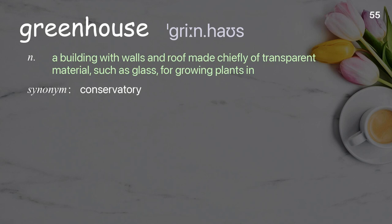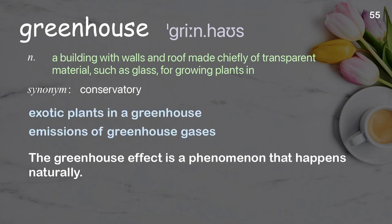Greenhouse: a building with walls and roof made chiefly of transparent material, such as glass, for growing plants in. Examples: exotic plants in a greenhouse; emissions of greenhouse gases. The greenhouse effect is a phenomenon that happens naturally.